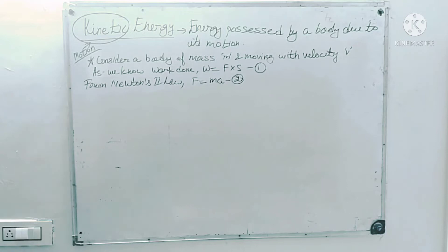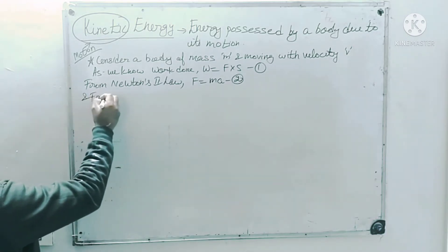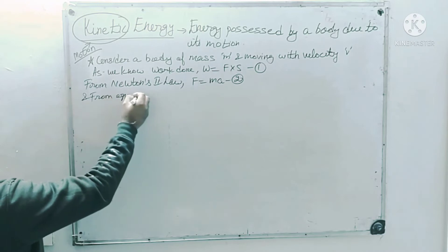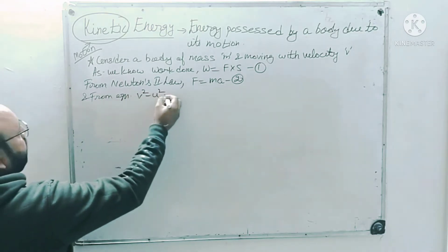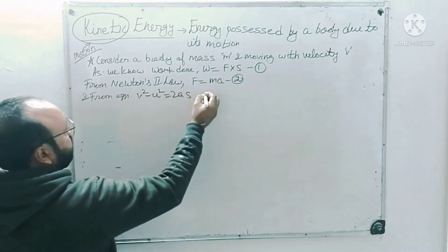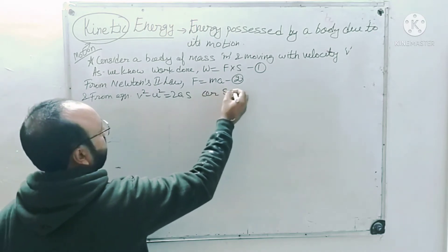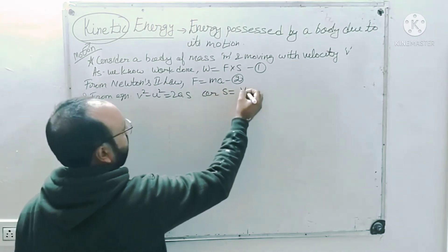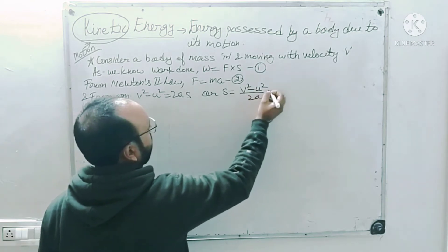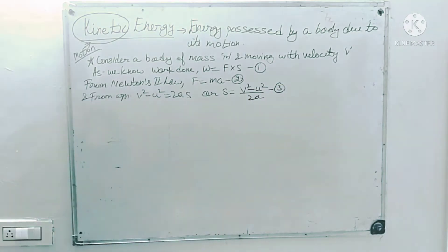Now from the equation of motion: v² minus u² is equal to 2as. So the value of s is equal to (v² − u²) / 2a. This is my third equation.